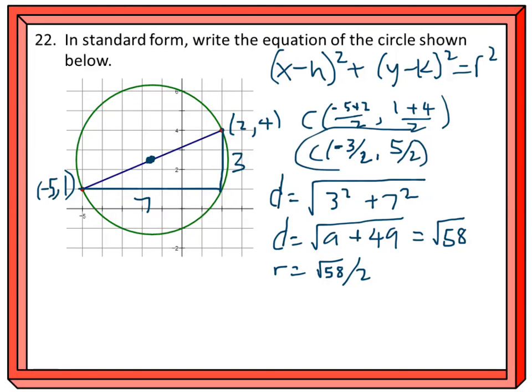Now we have our center point and radius, so we can write the equation. It's x minus a negative, so (x + 3/2)² plus